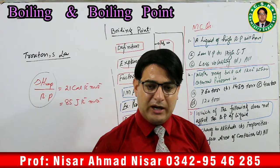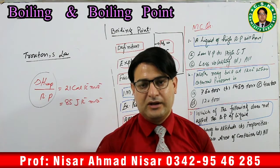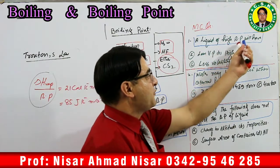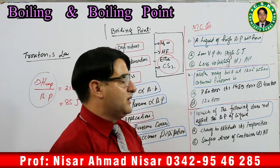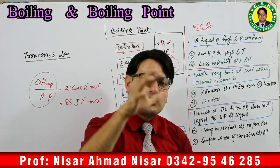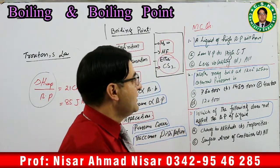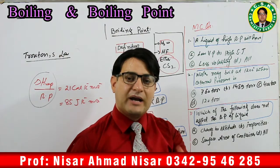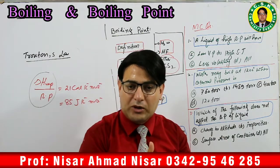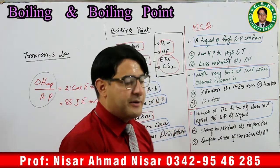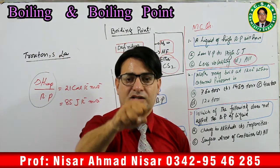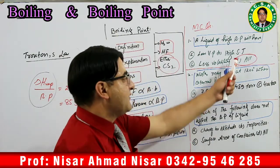That covers boiling point, its factors, and applications. Now let me solve a couple of MCQs. First MCQ: a liquid with a high boiling point will have — option: low vapor pressure, high surface tension, less volatility, or all of these? A high boiling point means strong attraction forces → low vapor pressure (correct), high surface tension (correct), and less volatility (correct). So the answer is all of these.